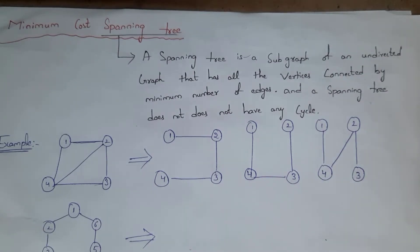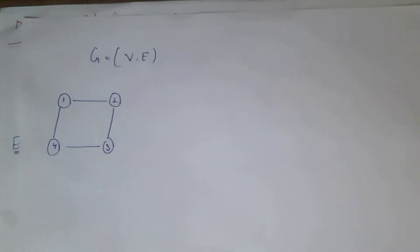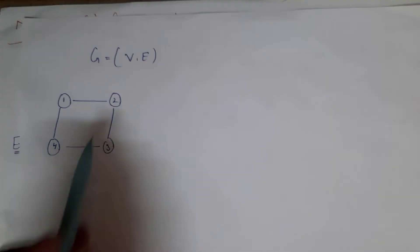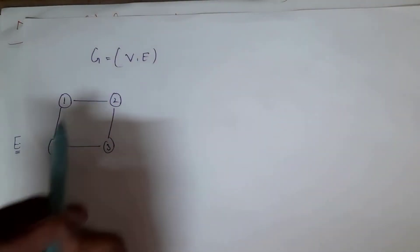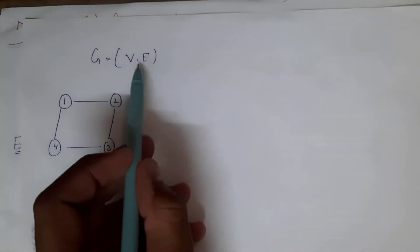A spanning tree is a subgraph that contains all vertices and a minimum number of edges. This spanning tree is an undirected graph that does not have any cycle. I will give one example so you can clearly understand. You can define a graph G as V comma E, where V stands for vertices and E stands for edges.